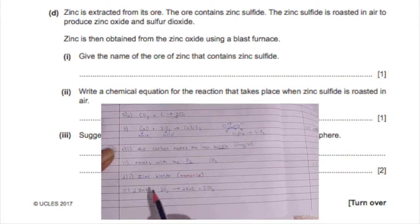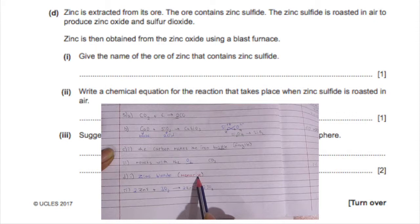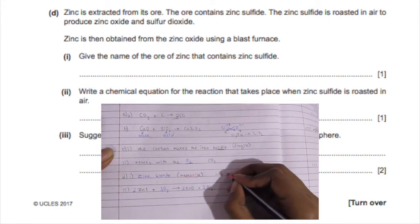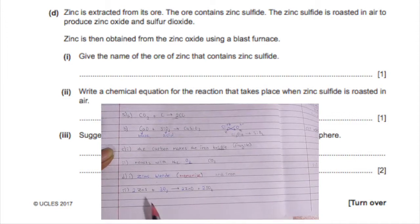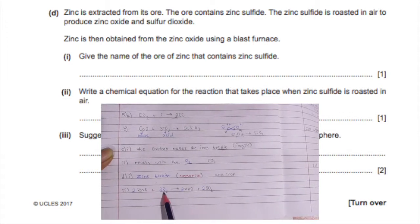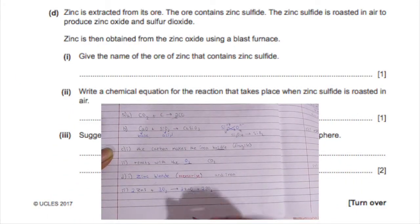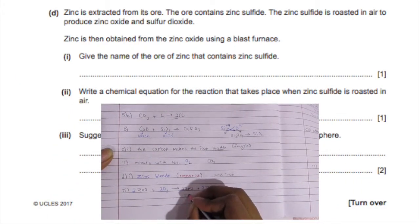Now the name of the ore of zinc that contains zinc sulfide is zinc blende and you need to memorize that, and you need to know the ones for iron as well. And now zinc sulfide reacts with oxygen to give you zinc oxide and sulfur dioxide.